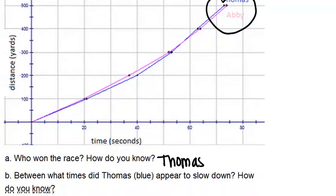All right part B, between what times did Thomas appear to slow down? How do you know? So when we're talking about slowing down we're talking about the speed. And the speed in a distance time graph is represented by the slope of the line. So we're looking for when did Thomas, the blue line, have a slope that seemed to decrease. And looking at the graph it looks like that's about right here. The slope is definitely less than it is for example right here or right here. He would say that's between 20 seconds and 40 seconds that he appeared to slow down.